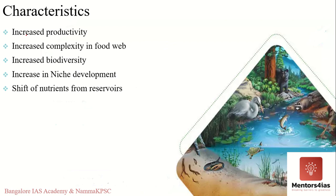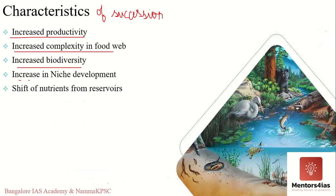Certain characteristics are associated with succession. Whenever succession takes place, there is increased productivity, increased biodiversity, and food webs become more and more complex. There is a shift of nutrients from reservoirs and an increase in niche development. Succession also occurs faster in areas existing in the middle of large continents, because seeds from plants of several communities reach there much faster and help establish a climax community.